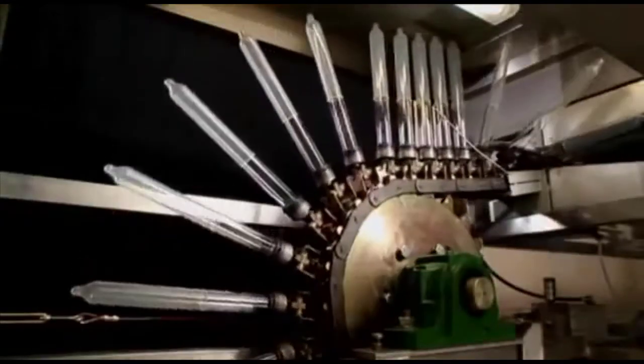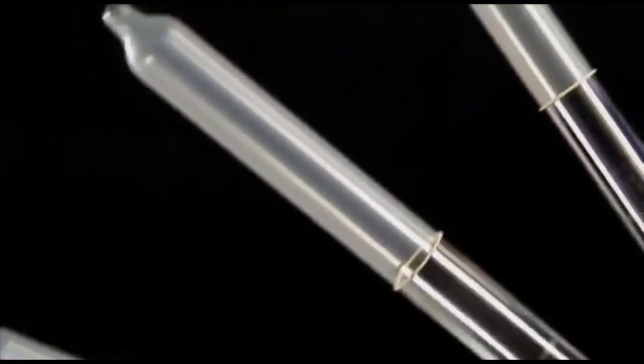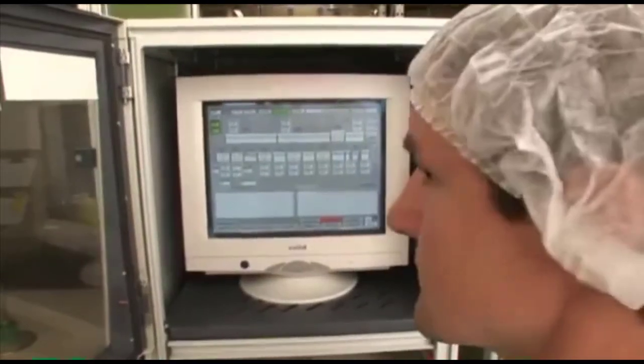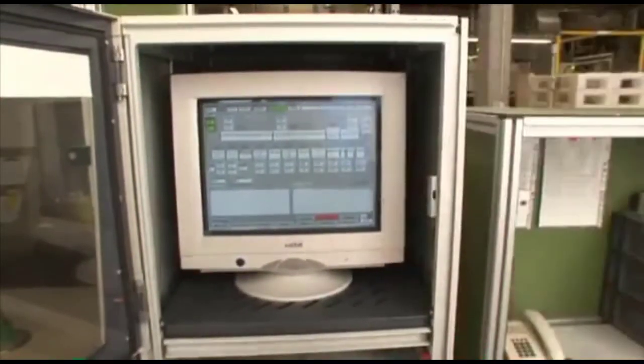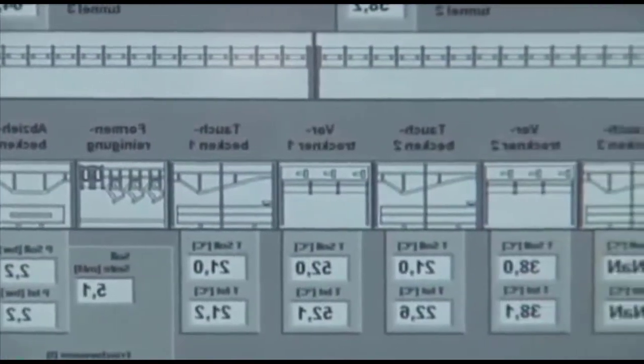To produce safe condoms with an adequate thickness, every condom is immersed and dried twice. All temperatures, as well as the immersion speed, are constantly monitored to ensure smooth operation of a fully-automated immersion chain.